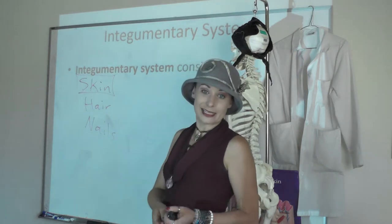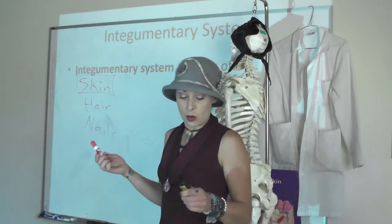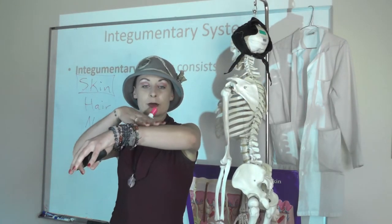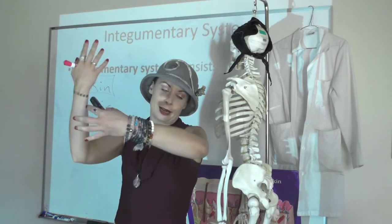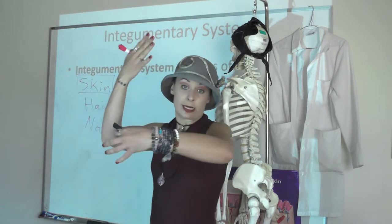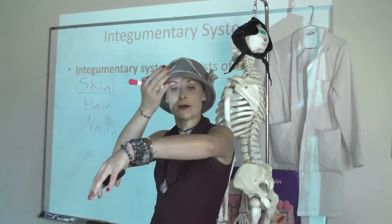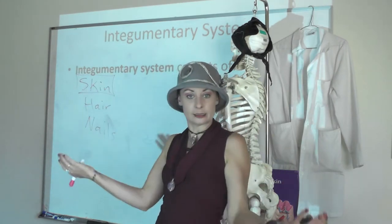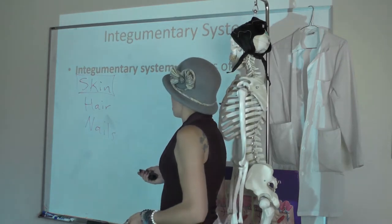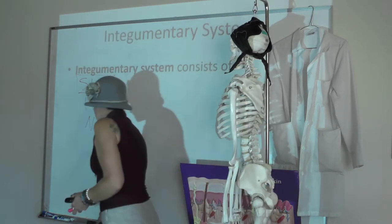An interesting thing about the skin is that it never stops growing. It grows from the stratum basale upward — the dermis is below that. It forever grows upward and outward, dies off, and you slough off those dead skin cells. So let's jump right in.